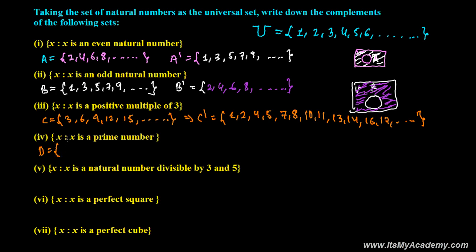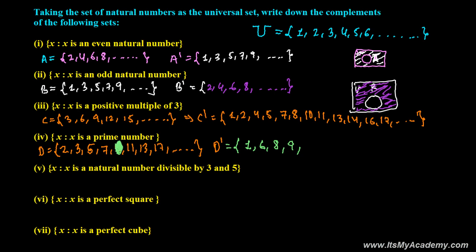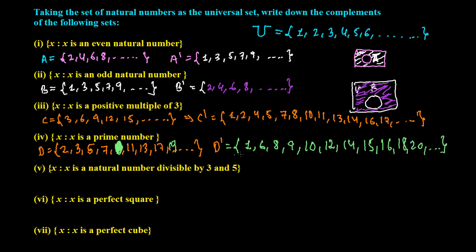Now set D, where X is a prime number. The prime numbers are 2, 3, 5, 7, 11, 13, 17, and so on. D complement means we write all composite numbers plus 1, since 1 is neither prime nor composite. So we include 1, skip 2, skip 3, take 4, skip 5, take 6, skip 7, take 8, take 9 (composite, multiple of 3), take 10, take 12, skip 11, take 14, 15, 16, 18, skip 19 (prime), take 20, and so on.